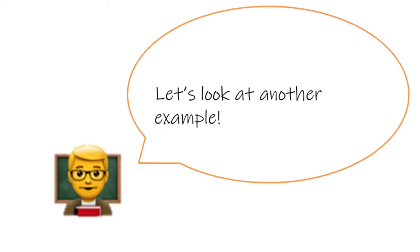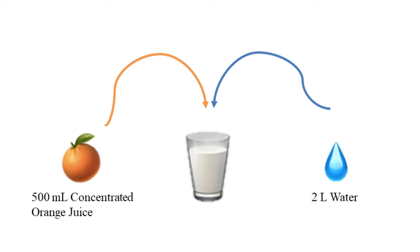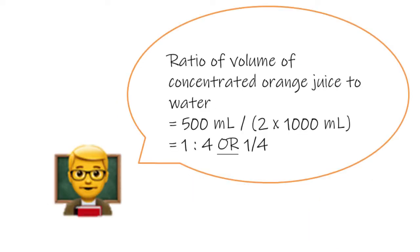Take this for example. We mix 500 milliliters of orange juice concentrate with 2 liters of water. The ratio of the volumes of orange juice concentrate to water is not 500 milliliters to 2 liters, but 500 milliliters to 2 multiplied by 1000 milliliters, which equals to 1 to 4 or 1 over 4. We should make both volumes in the same unit before calculating the ratio.